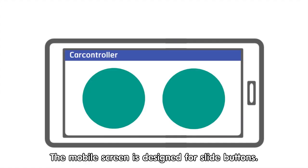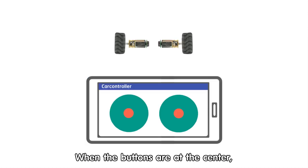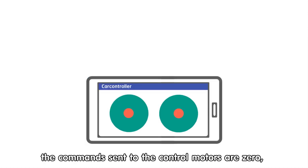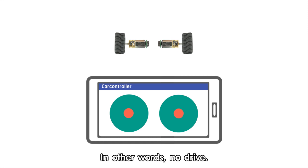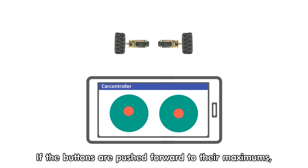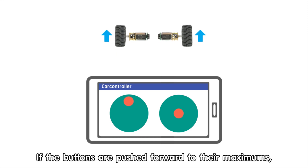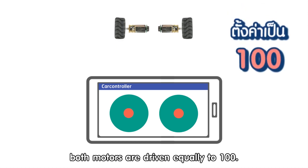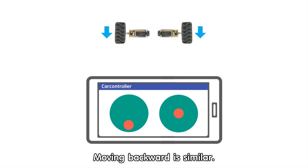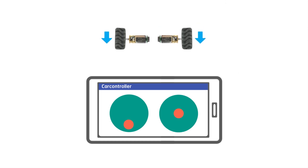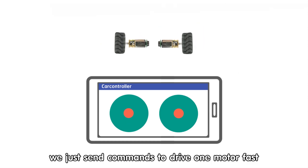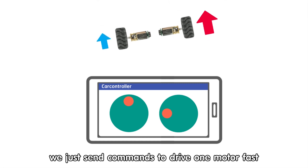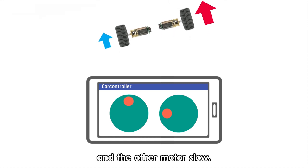The mobile screen is designed for slide buttons. When the buttons are at the center, the commands sent to control the motors are zero — in other words, no drive. If the buttons are pushed forward to their maximum, both motors are driven equally to 100. Moving backward is similar. To make a turn, we just send commands to drive one motor fast and the other motor slow.